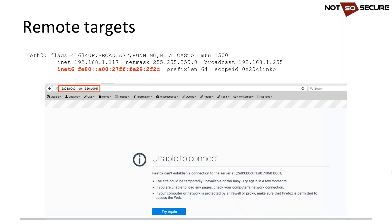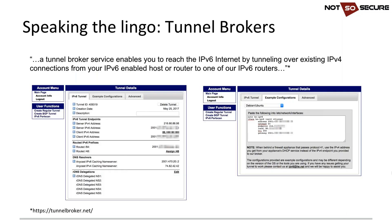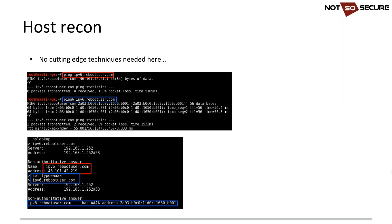If you're on a local LAN with only a link-local fe80 address (which isn't routable), a tunnel broker can help. A tunnel broker lets you use an IPv4 network to communicate with an IPv6 host acting as a proxy. Be aware that you're passing traffic over an unknown entity. In the UK, many ISPs supply global IPv6 addresses by default, so connectivity is available out of the box.